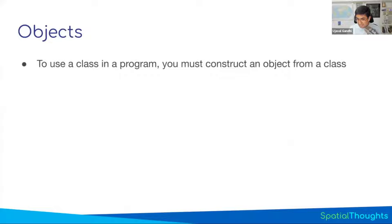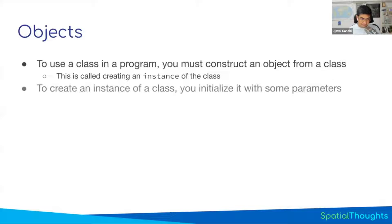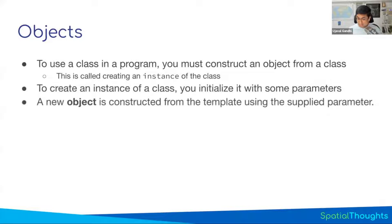To be able to drive the car, you need to first construct an object. You take the class, you want to use it — you have to construct an object. This is also called creating an instance of the class. You take a class, you initialize it, and you get an object. Once you initialize it and get an object, then only you can use that class.